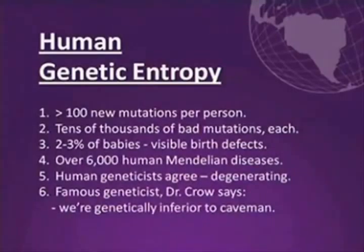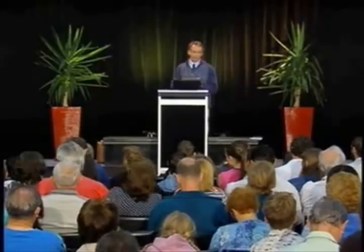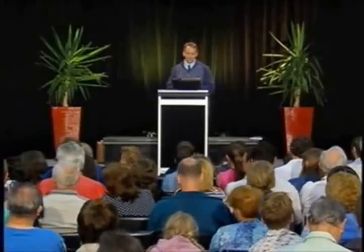That means each of you have 100 more mutations than your parents had, and that you have transmitted that to your children, and the children each have another 100 mutations. Every generation, 100 new mutations are added to the genome — and that's the lowest estimate. I believe the actual mutation rate is substantially higher than that. So by now, we have tens of thousands of bad mutations each. How many of you are mutant? We are all mutant. We are seriously mutant.